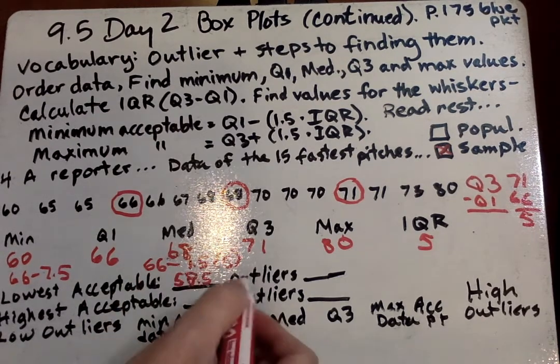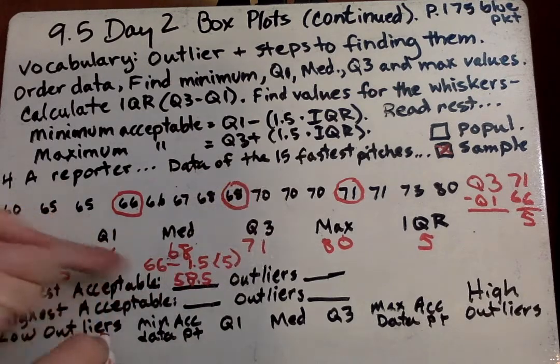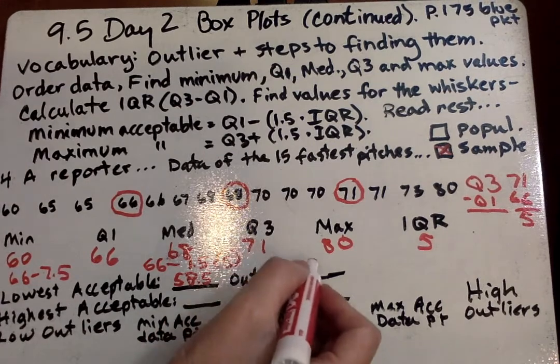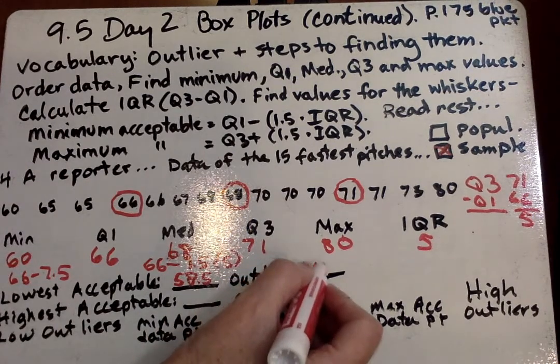Now, what are our outliers? Are there anything lower than 58.5? No. So for this one, there's going to be no outliers, so we just write none.